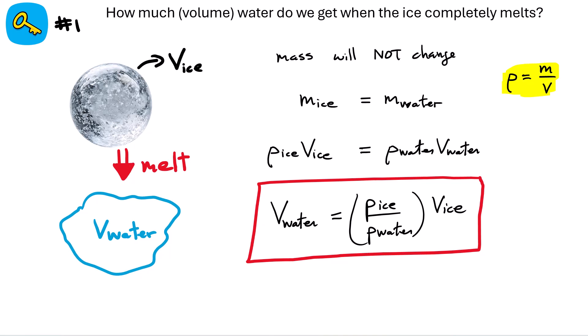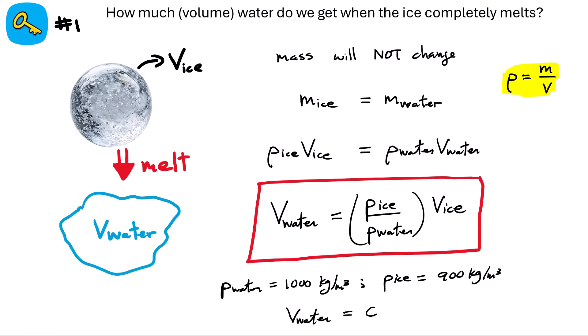Looking up the numbers: the density of water is 1000 kg/m³ and the density of ice is approximately 900 kg/m³. Substituting those in, the volume of water you get is about nine-tenths — 900 over 1000 — multiplied by the total volume of the ice ball. You get less volume because the density of water is greater than the density of ice.